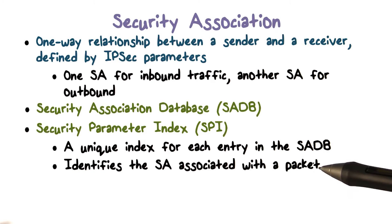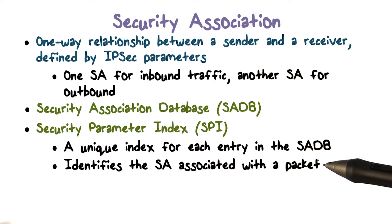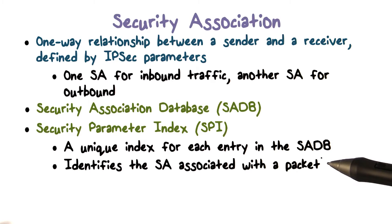The SPI is included in an outgoing packet so that the receiver can use it to look up the SA to unprocess — for example, to decrypt the packet.